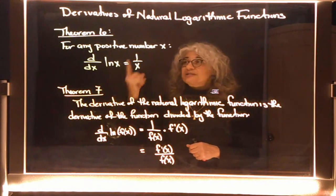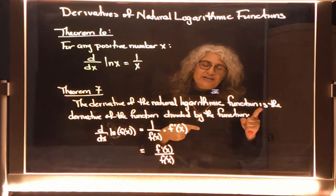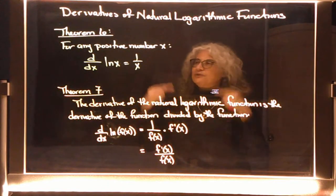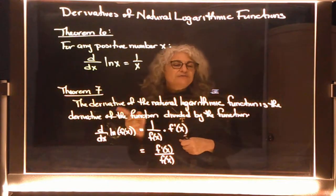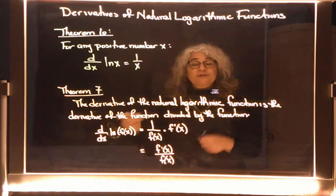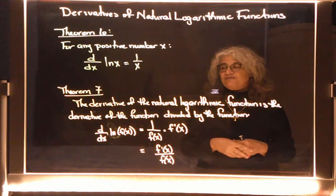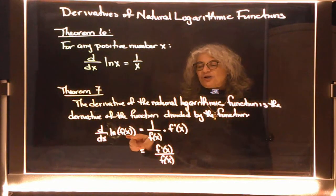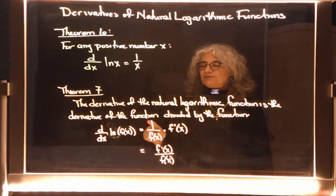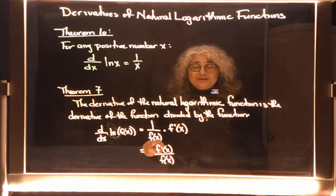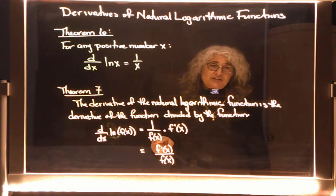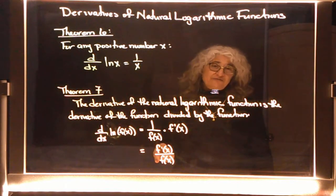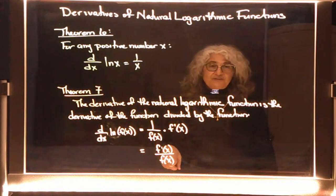The next theorem is very similar to the first one, just like on the natural exponential functions. It builds upon Theorem 6. The derivative of a natural logarithmic function of f(x) is the derivative of the function divided by the function itself. So the derivative of ln(f(x)) is 1 over f(x), but then you also need to multiply by the derivative of that function — that's what gives you f'(x) divided by f(x).